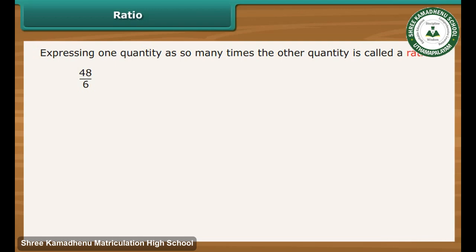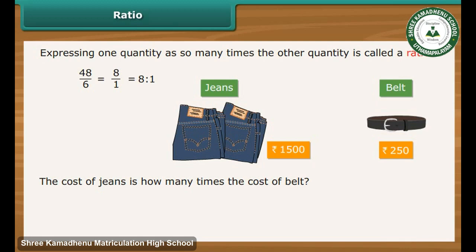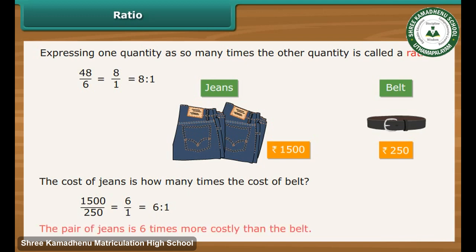48 divided by 6 is 8 divided by 1. 8 divided by 1 can also be written as 8 is to 1. Colon is the symbol used to denote ratio. For example, Tushar bought a pair of jeans for Rs. 1500 and a belt for Rs. 250. The cost of jeans is how many times the cost of the belt? To calculate the ratio, divide 1500 by 250, which is the same as 6 divided by 1, expressed as 6 is to 1. Therefore, the pair of jeans is 6 times more costly than the belt.